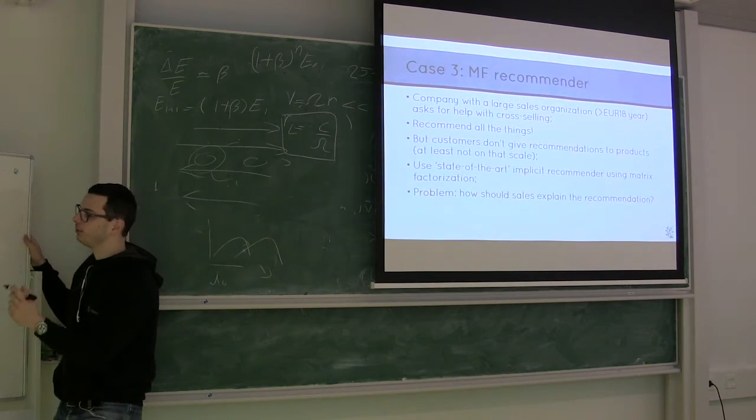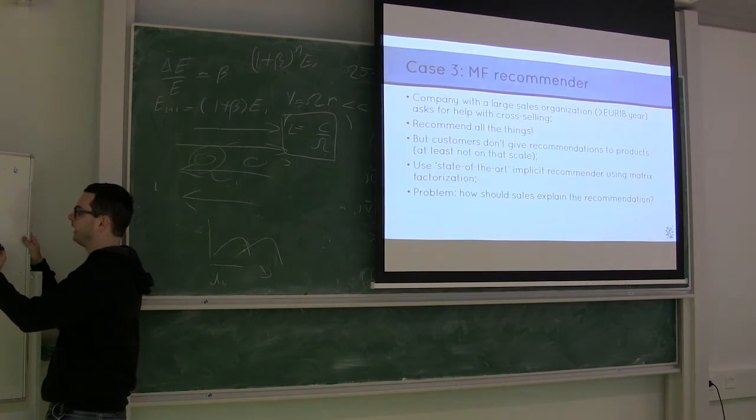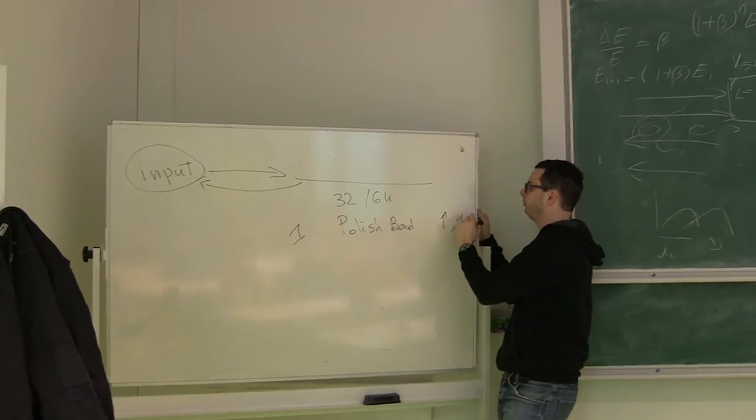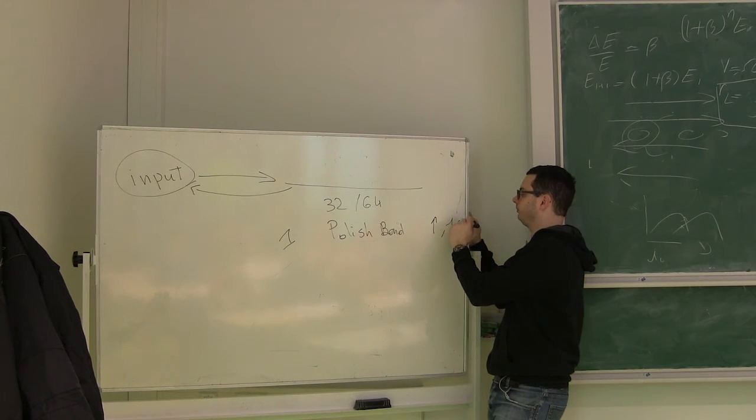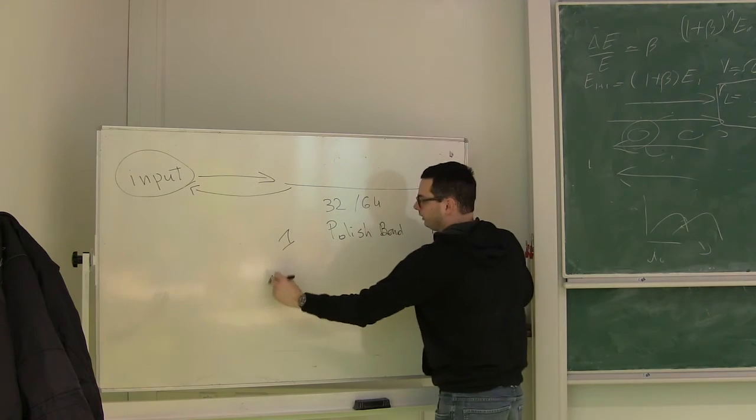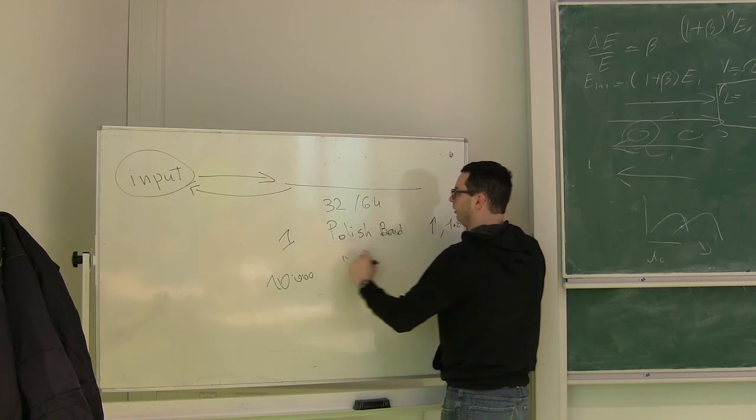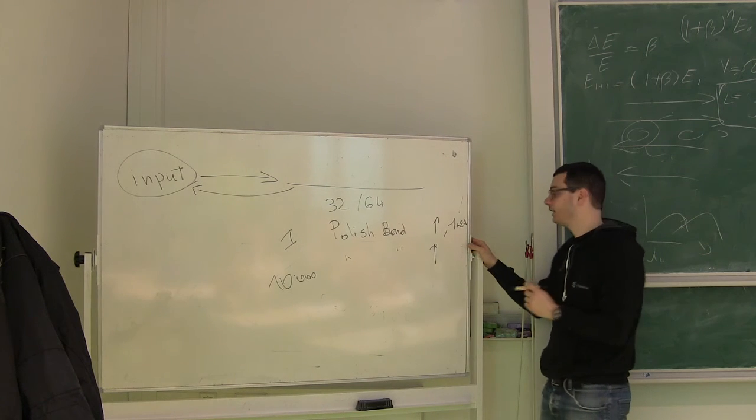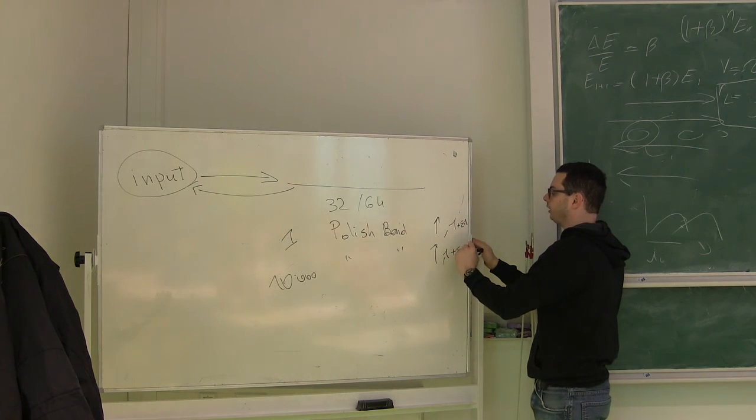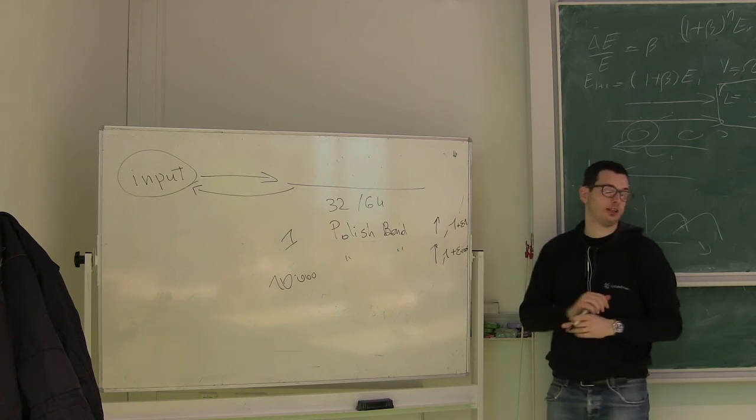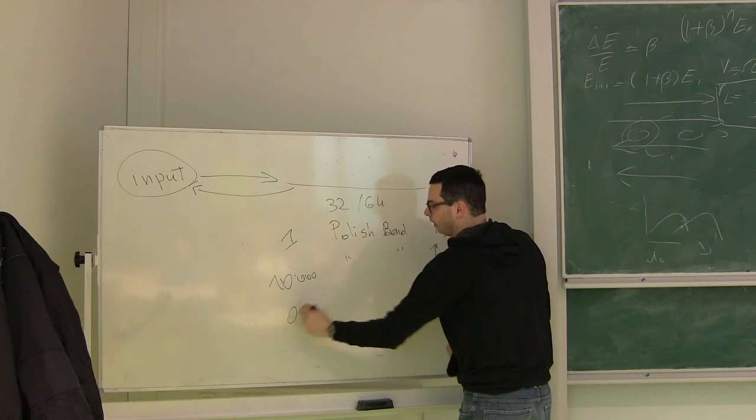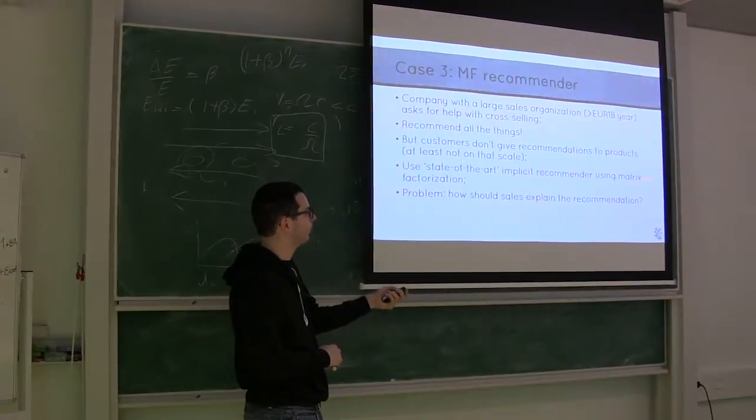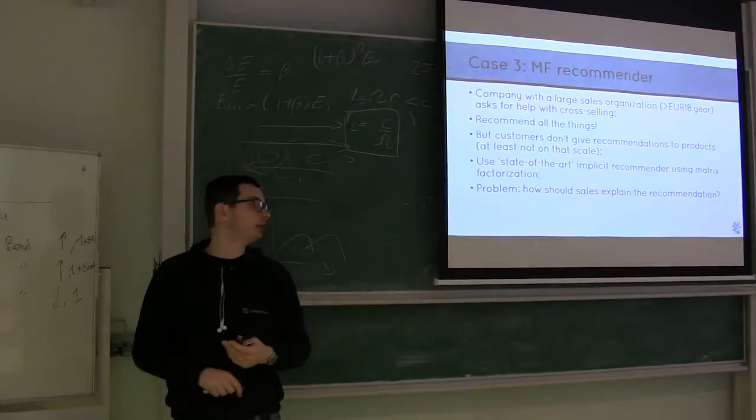So that's matrix factorization. And the fact that it's implicit comes it's about the following. So let's say you bought once the Polish bond. So we all know in finance buying one bond is not a strong indication of liking the product or needing the product. It could have been an error. It could have been whatever. So the implicit recommender says, okay, this guy likes the product, but we have a low confidence. Let's say a confidence of one plus epsilon one bond. If you on the other hand bought 10,000 Polish bonds, the system would say, well, this guy actually likes it and I can give it a much higher confidence. Epsilon times 10,000. If you never bought the bond, and it was won by this metric factorization guy. So that's what I mean by state of the art.